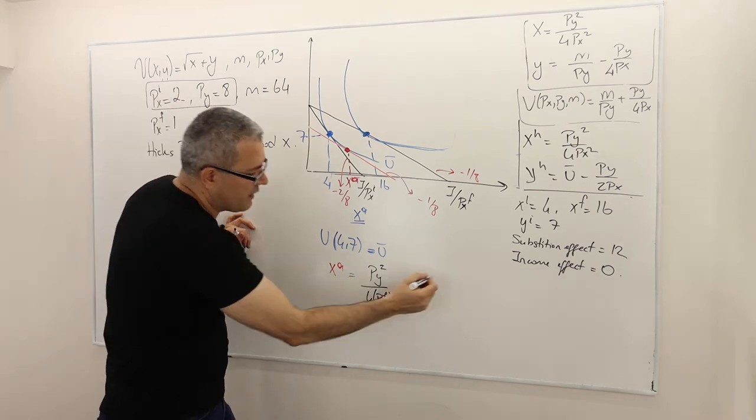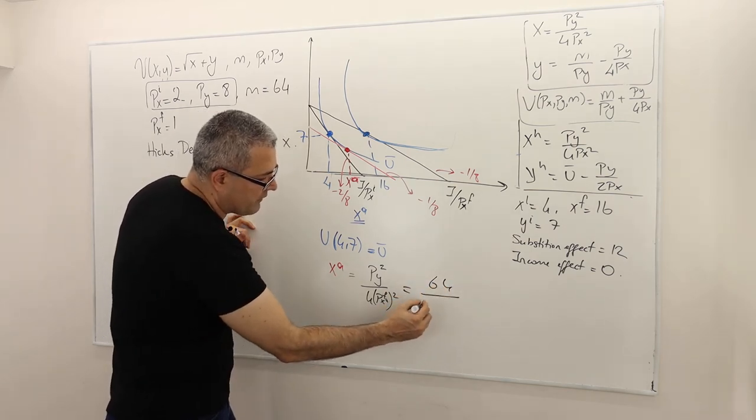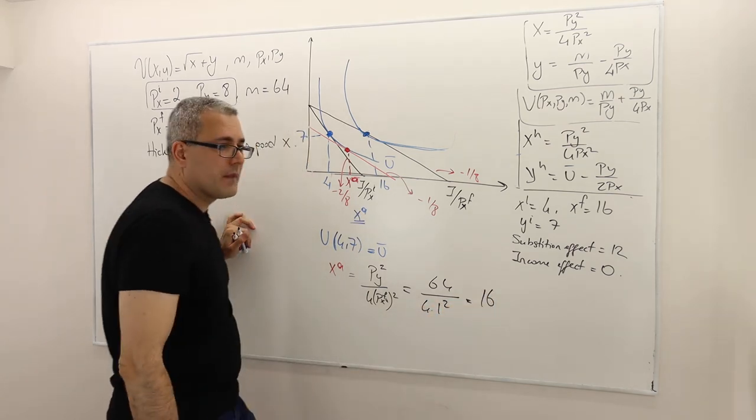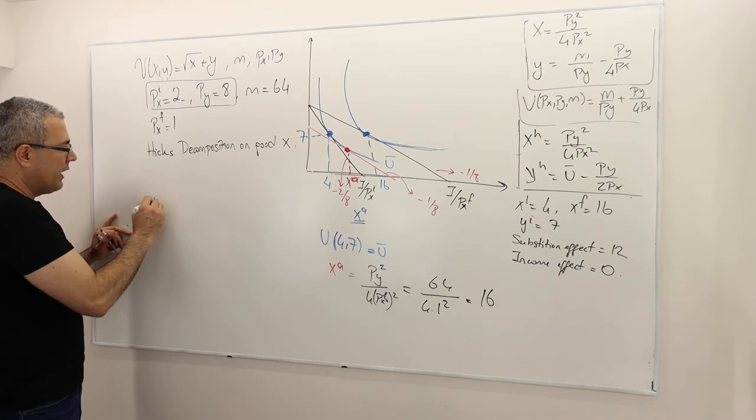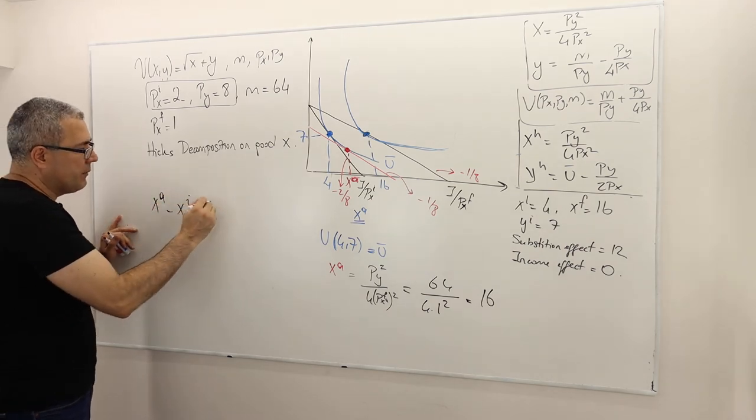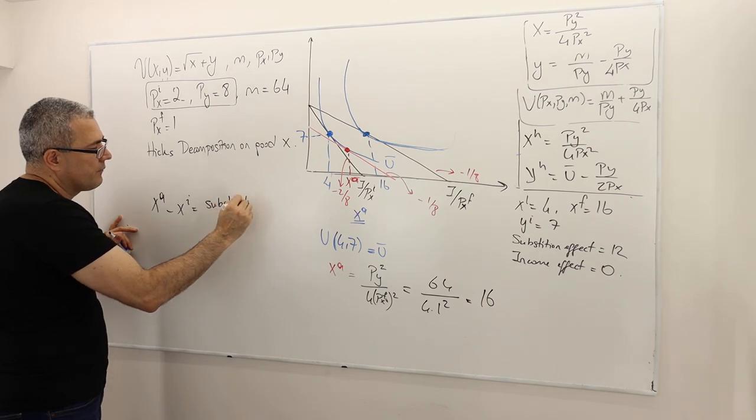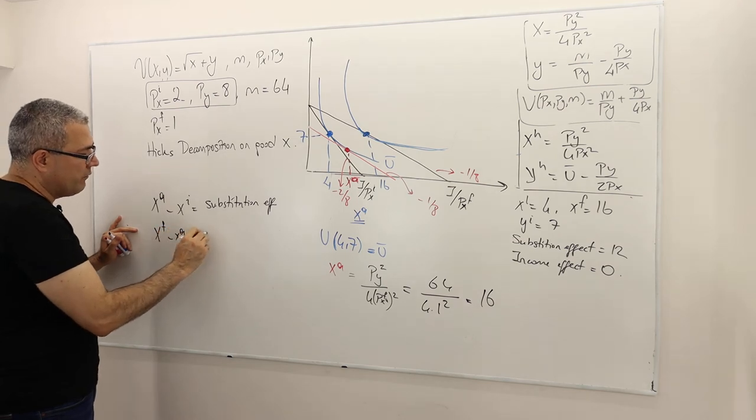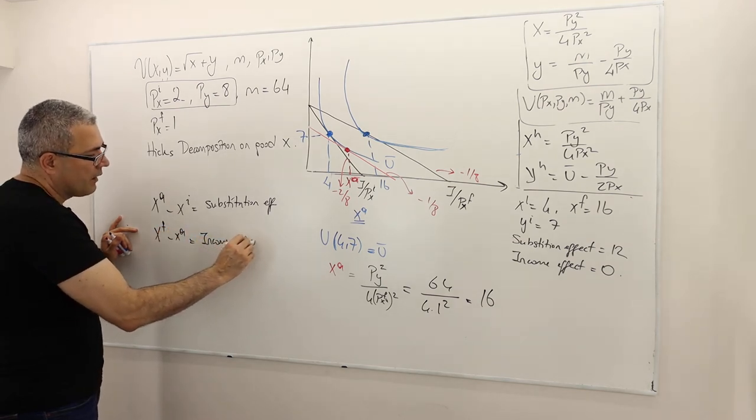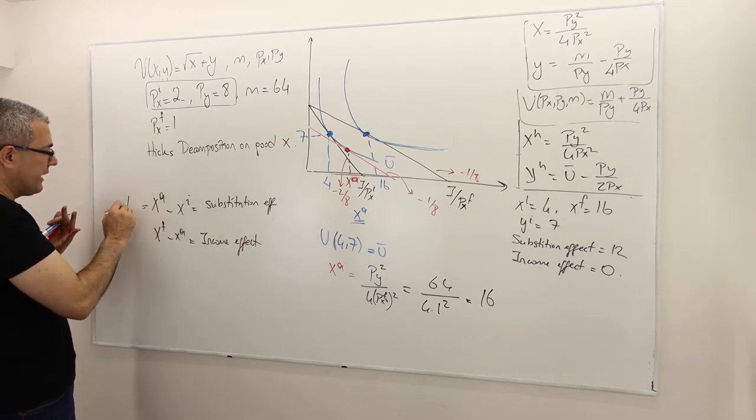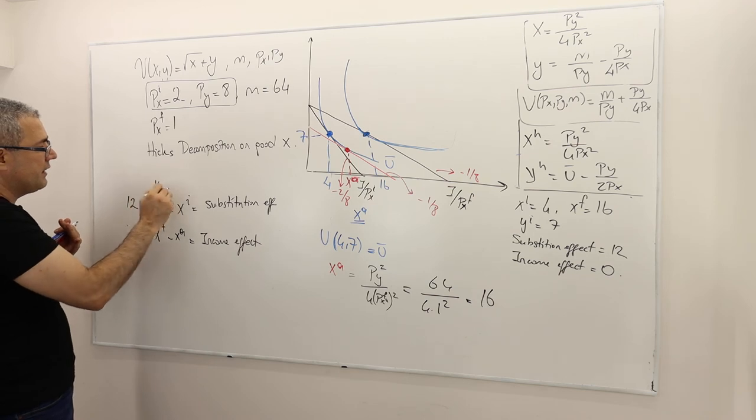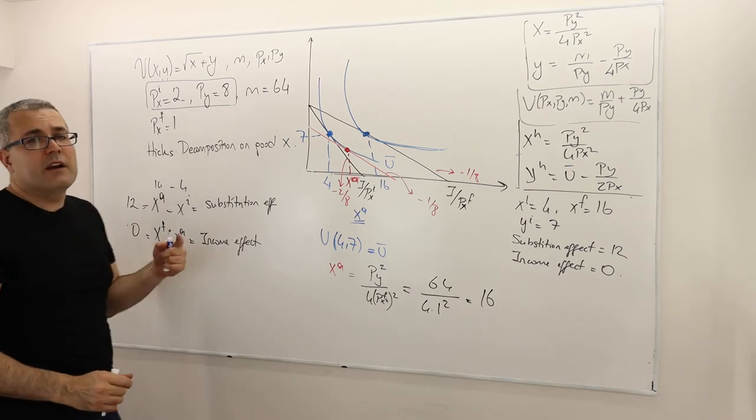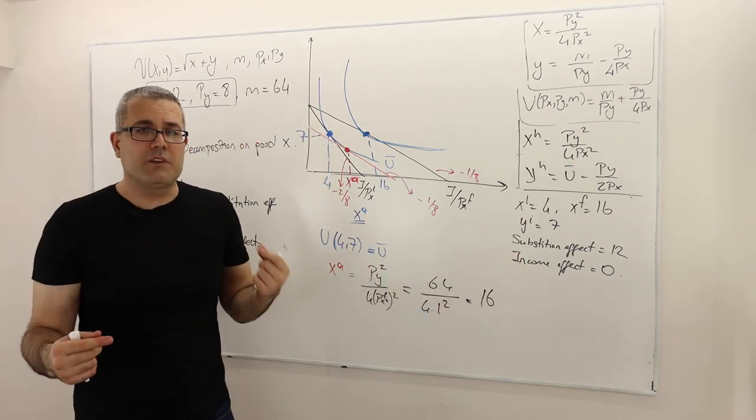So if you do this, you have to have exactly the same level of XA, which should be 16. PY squared, which is 64, divided by 4 times PX final squared, which is 1 squared. So it's 16. And again, once again, XA minus X initial is going to give me the substitution effect. And then X final minus XA should give me the income effect. So in this question, the substitution effect is again 12, because this is 16, this is 4, and so it's 12. But the income effect is 0. Very much similar to the Slutsky decomposition.